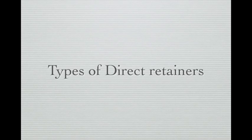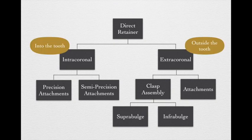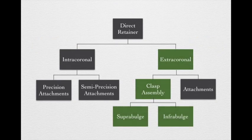Types of direct retainer. Direct retainers can be classified in several ways. First, by location: intracoronal or extracoronal. Intracoronal means the retainer is inside the tooth; extracoronal means the components are outside. Intracoronal retainers can be precision or semi-precision attachments. Extracoronal retainers include attachments or clasp assemblies. Nowadays, we use clasp assemblies most often. Clasp assemblies can also be divided into two groups depending on location.